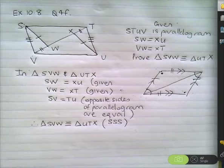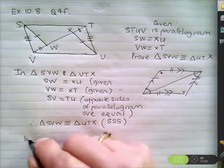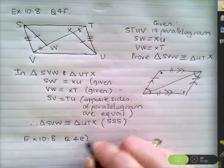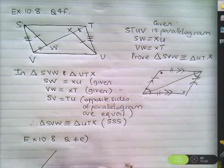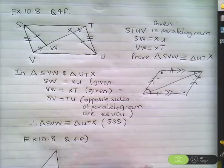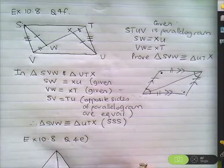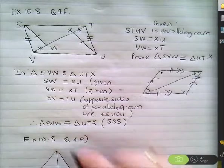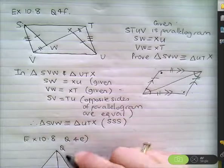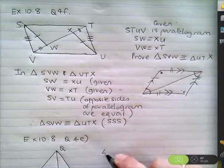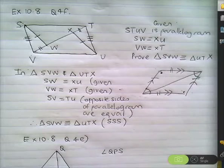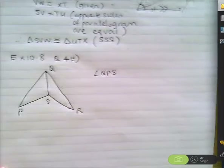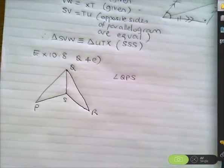Let's do exercise 10.8, question 4E. It's not too hard, but we still need to practise. So I'm drawing it out — question 4E. I've got P, S, R, and Q. The given information: the angle QPS equals angle QRS. You're also told that SQ bisects angle PQR. And you are asked to prove that triangle QPS is congruent to triangle QRS.